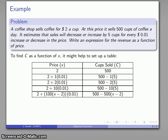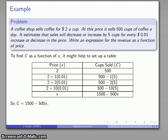I might want to do a little bit of algebra to make that expression look a little bit nicer. And so there's my cleaned up form of the expression. Number of cups sold is going to be 1500 minus 500x. That tells me that C is 1500 minus 500x.